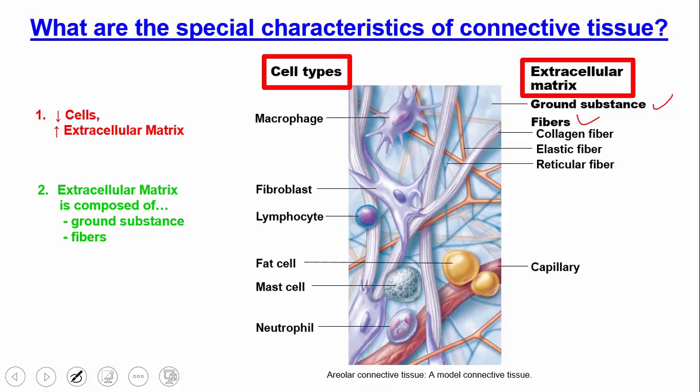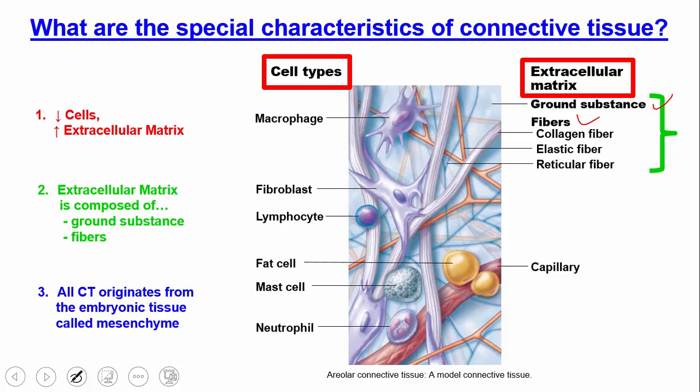The ground substance is sort of the fluid in the background, and the fibers are the proteins that extend throughout that fluid, almost like ropes extending through an ocean. The third characteristic is that all connective tissue originates from a type of embryonic tissue called mesenchyme.